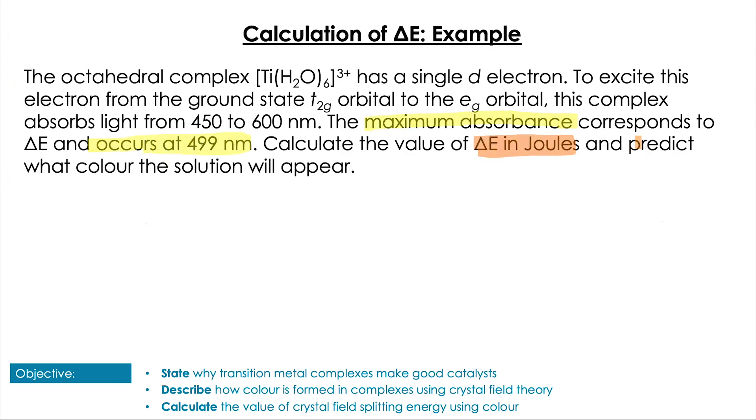Let's have a look at an example. Here it's telling us we've got an octahedral complex that has a single d electron. To excite this d electron from the ground state to the excited state, it absorbs light from 450 to 600 nanometers. The maximum absorbance corresponds to delta E and occurs at 499 nanometers. Calculate delta E in joules and predict what color the solution will be.